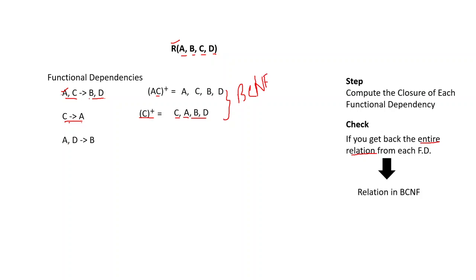Now let us add another functional dependency which says AD gives B. Your relation now has three functional dependencies. We have already checked the first two. Next, in order to find out if A, B, C, D is still in BCNF, we have to check the closure of this third dependency.